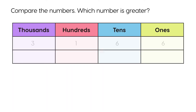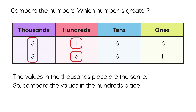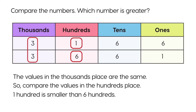Compare the numbers. Which number is greater? The values in the thousands place are the same. So, compare the values in the hundreds place. One hundred is smaller than six hundreds. So, three thousand six hundred sixty-one is greater than three thousand one hundred sixty-six.